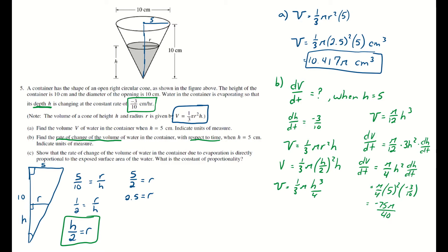The correct units: that's how volume is changing with respect to time, so the units are centimeters cubed per hour — because notice up in the question the rate is given per hour.